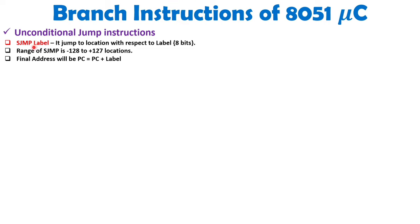In Short Jump, the label has a size of 8 bits representing a signed number, and the range of this Short Jump is from minus 128 to plus 127 locations. The final address of the Program Counter will be the initial value of the Program Counter plus the label which we mention. So Short Jump is used for jump operations within this range only.